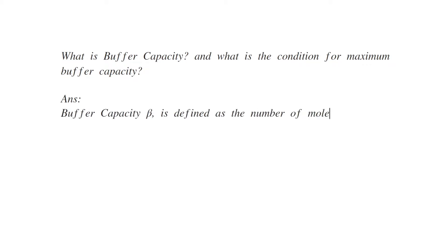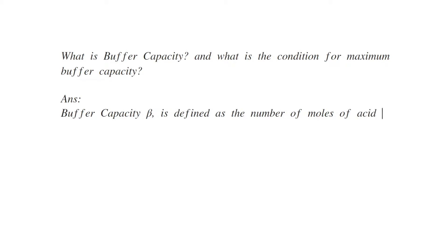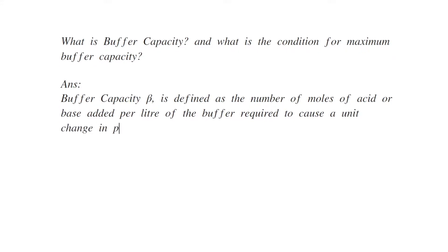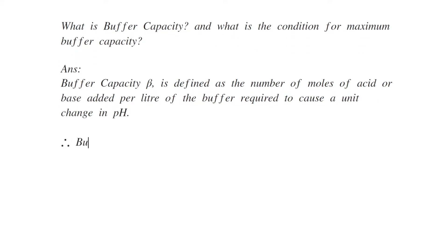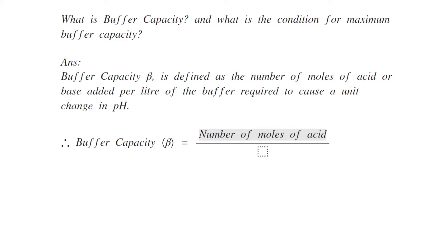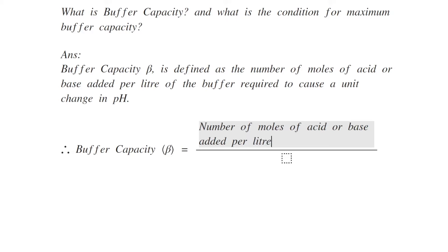Buffer capacity beta is defined as the number of moles of acid or base added per liter of the buffer required to cause a unit change in pH. That means it is the moles of acid or base added to the buffer solution so that there is only a small change in pH. Buffer capacity beta is given by the ratio of number of moles of acid or base added per liter of the buffer solution divided by the change in pH, or dx by d(pH).